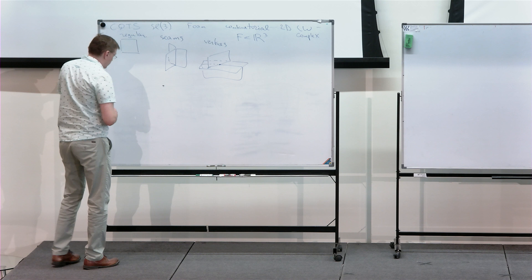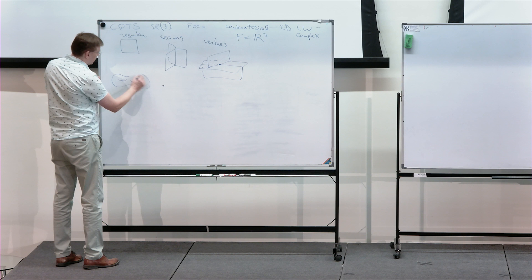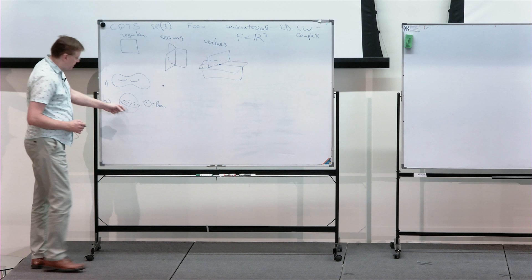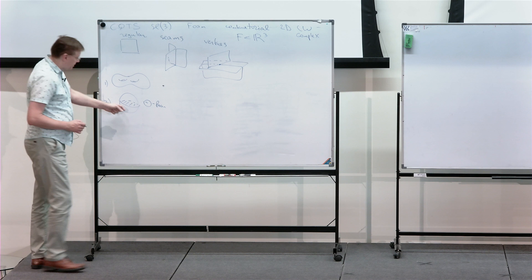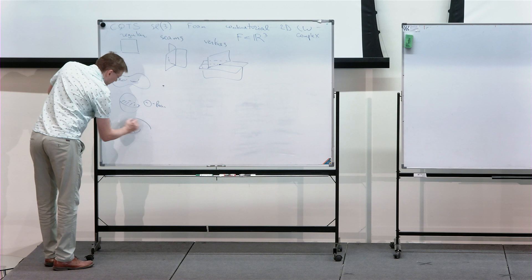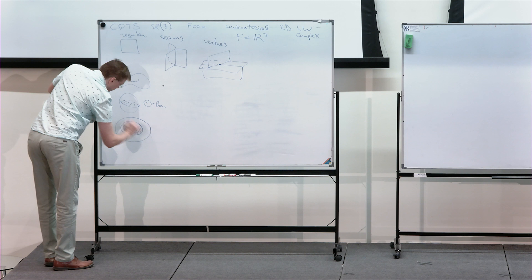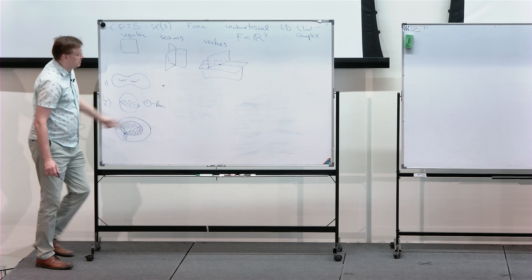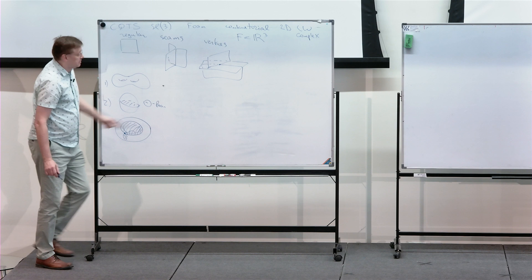Let me give some examples. A surface embedded in R3 is a foam. Another example is what we call a theta foam, which consists of three disks glued together along a singular seam — a circle. Another example is starting with a torus standardly embedded in free space, adding a meridional disk and gluing on the outside a longitudinal disk. This foam has a vertex of the singular type. So those are examples of foams.